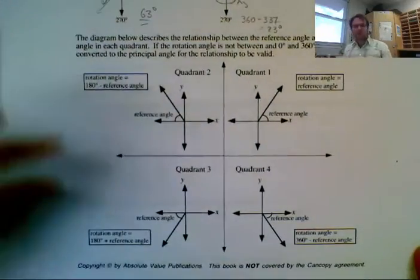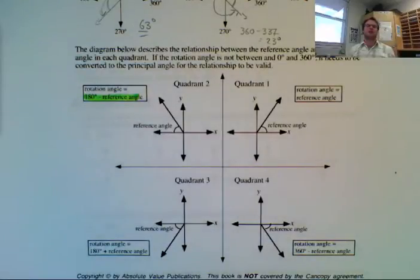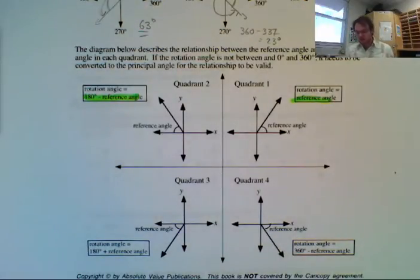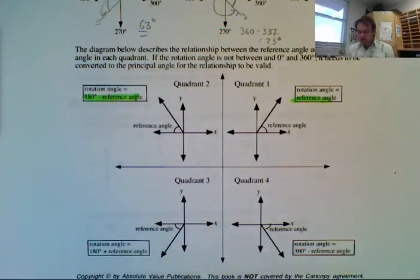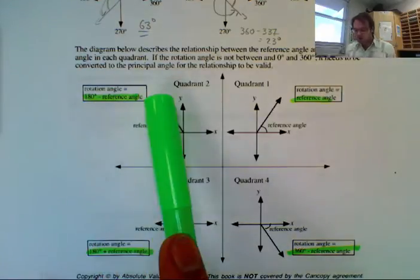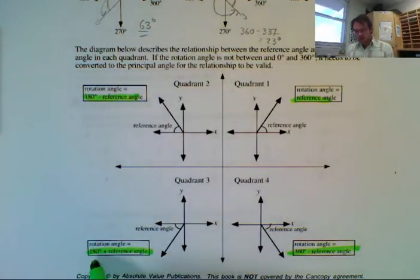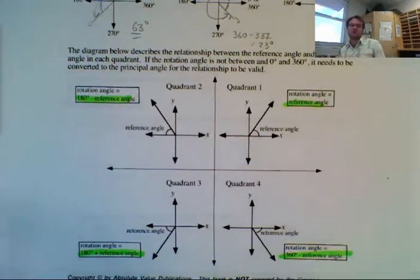This just gives you some ideas of how to remember. If it's in quadrant 2, we're always going to go 180 minus the reference angle. If it's in quadrant 1, the rotation angle is just whatever the reference angle is. In quadrant 3, the rotation angle is equal to 180 plus the reference angle. In quadrant 4, the rotation angle is equal to 360 minus the reference angle. And in quadrant 1, the reference angle and rotation angle are the same.